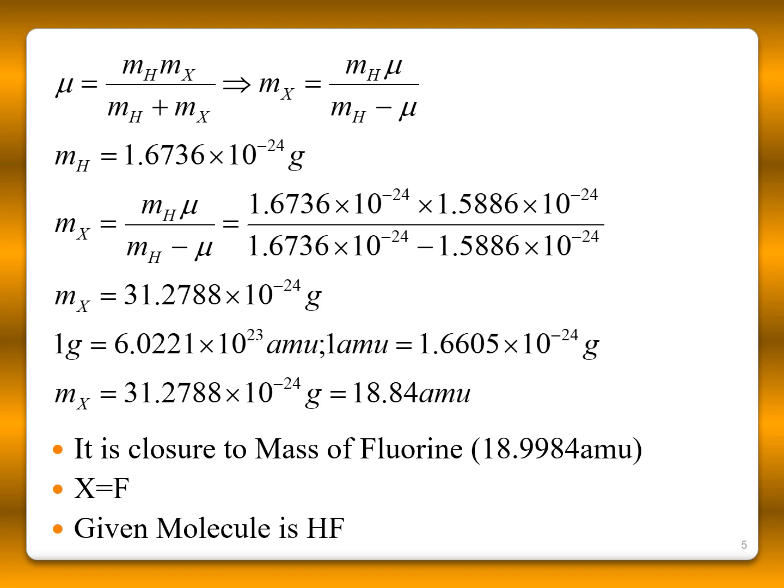And also, you know, 1 gram is 6.022 times 10 to the power 23 atomic mass unit. Otherwise, you can write 1 atomic mass unit is equal to 1.6605 times 10 to the power minus 24 grams. Now you convert this to atomic mass units. It is 18.84. It is closer to the mass of fluorine. X is fluorine.